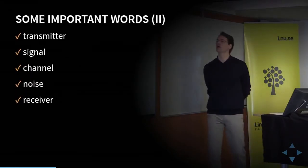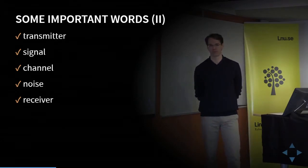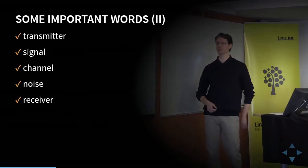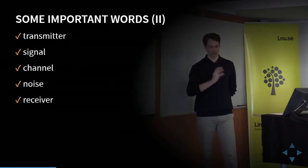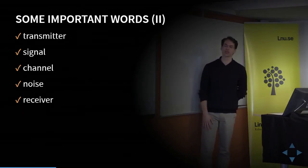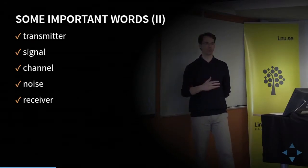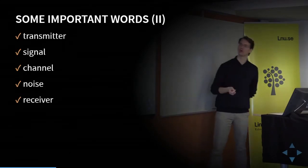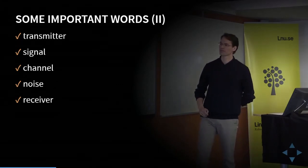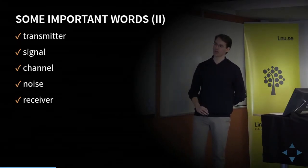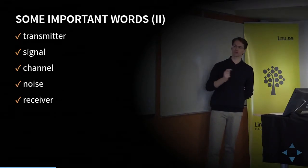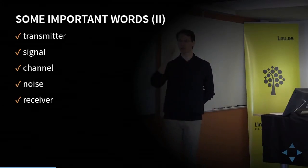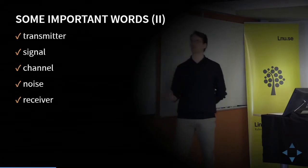We have five more words. The transmitter is the thing that sends out the message. We have the signal, which is the physical representation of the message — when I speak in this room, the sound waves are the signal. We have the channel, the thing that carries the signal from the transmitter to somewhere else. And then we have noise, anything that affects this signal while traveling from transmitter to receiver. The receiver is the thing on the other end that can take this signal and turn it back into a meaningful message.